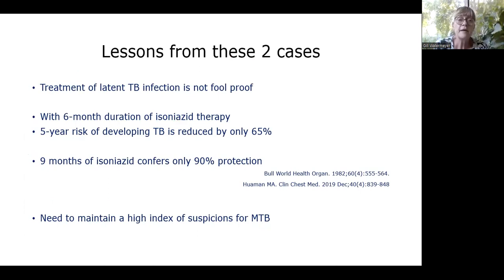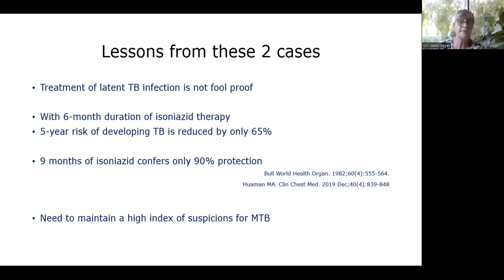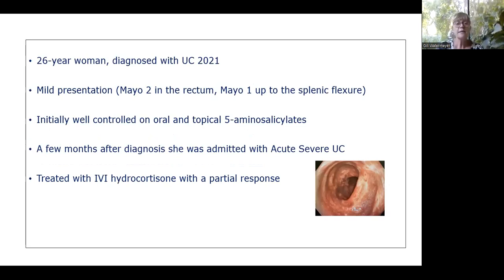CT abdomen showed a large pelvic collection, splenic micro-abscesses, and several large intra-abdominal lymph nodes. She was started on cefotaxime and metronidazole and a percutaneous drain was inserted. No acid-fast bacilli were seen on ZN staining, GeneXpert was negative for M. tuberculosis, but adenosine deaminase in the fluid was twice the upper limit of normal. Given the splenic micro-abscesses, large nodes on CT, and raised ADA suggestive of disseminated TB, a lymph node biopsy was performed.